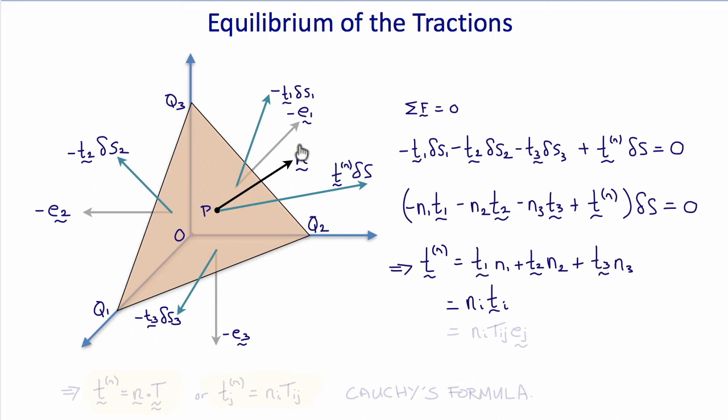Where t1, t2 and t3 are the tractions on these faces, n1, n2 and n3 are the components of the unit normal n. In other words, the traction vector t equals n i t i.